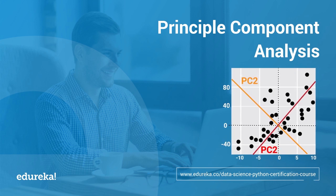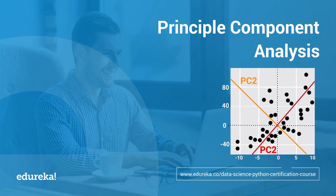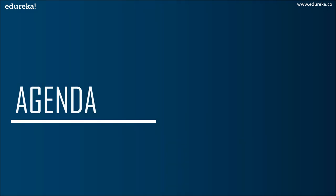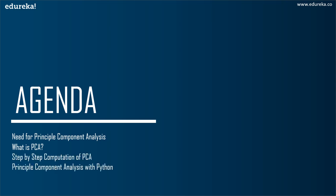In this session, you'll understand the concepts behind dimensionality reduction and how it can be used to deal with high dimensional data. We're going to start the session by understanding the need for principal component analysis, then discuss what exactly PCA is, then move on to the step by step computation of principal component analysis. We'll end the session by looking at a practical demonstration of how PCA can be used with Python.